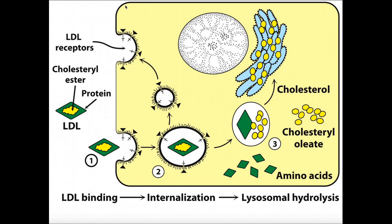Other types of cells will transform that cholesterol into other types of molecules like steroids such as testosterone, estradiol, cortisol, and also bile acids. For example, the liver makes bile acids, which are components of bile, which helps the small intestine emulsify fat from the diet. So there are a lot of purposes for getting cholesterol to cells.